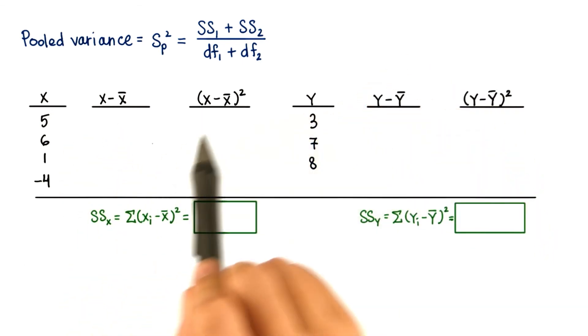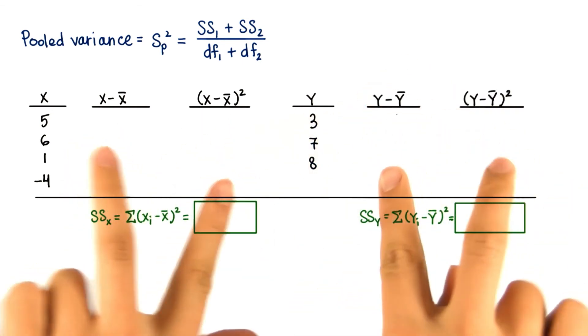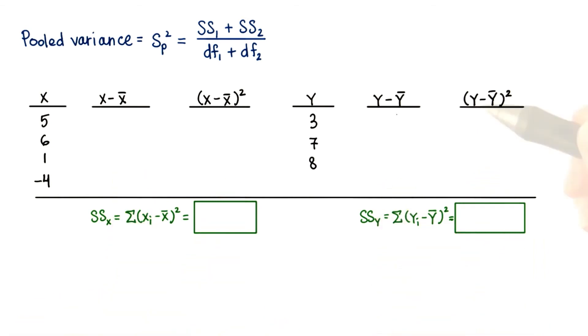You're welcome to write each deviation and squared deviation in these columns, but you don't have to. We just provide the boxes there so that can help you as you calculate the sum of squares.